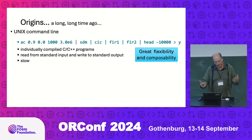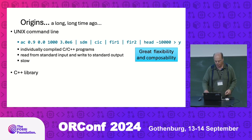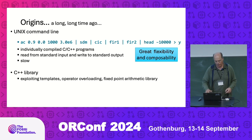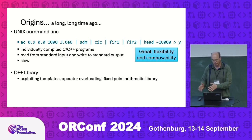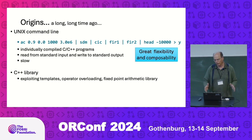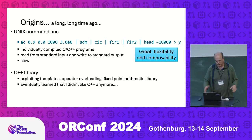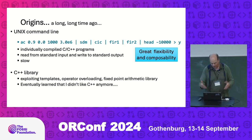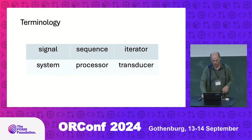To fix the performance problem, I moved it into a C++ library exploiting templates and operator overloading. I had a fixed-point arithmetic library and combined all that. For a while that worked well, but I kind of stopped enjoying programming in C++ and eventually came to Julia.